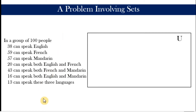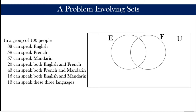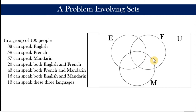Since there are three particular languages, we will draw three subsets inside the rectangle. Let's call the first subset Set E, representing the people that speak English. The second subset is the set of all people speaking French. The third subset is the set of all people speaking Mandarin. Notice that we overlap the three circles because some people speak two or all three languages, or even none.